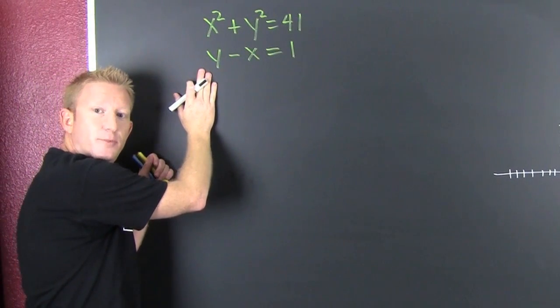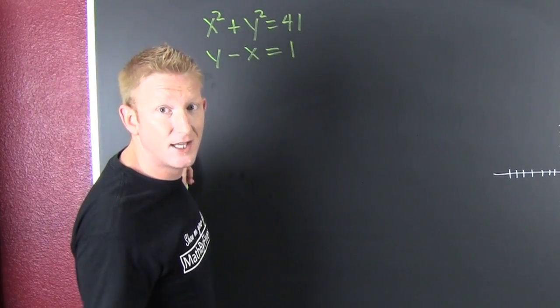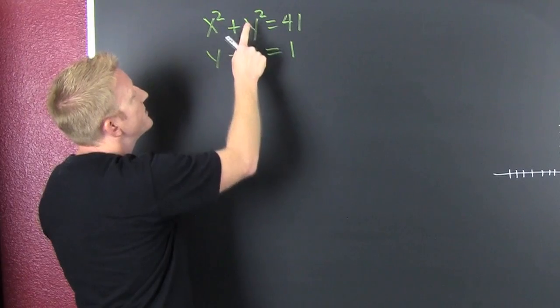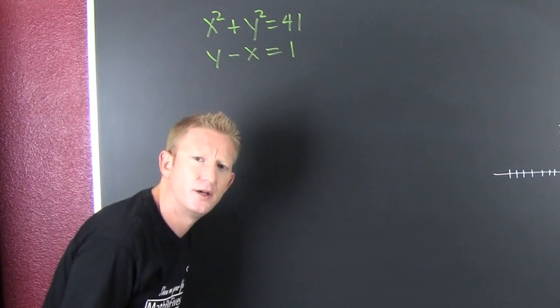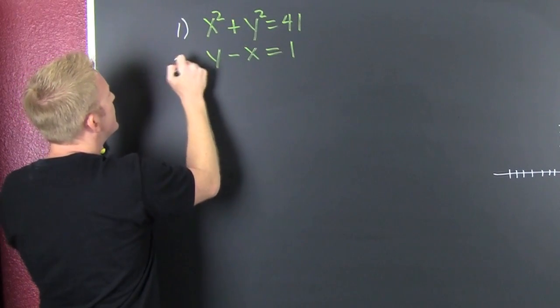This first one I want to do by way of substitution. And you're like, why? Because elimination is out the question because this y is singular and that one is a multiplicity too. So here we go. If this is equation one, then this is equation two.